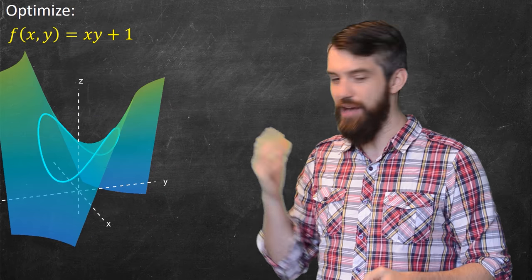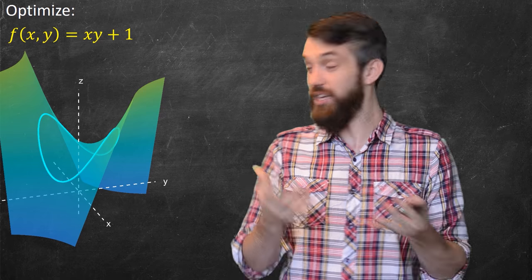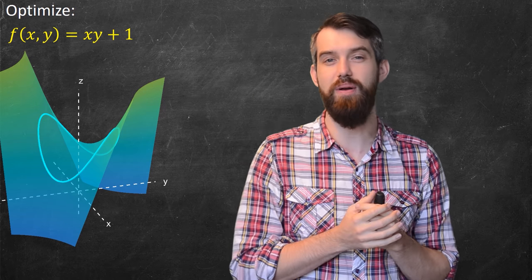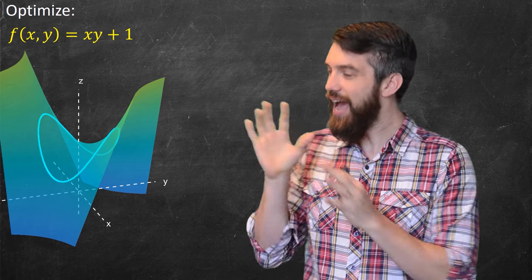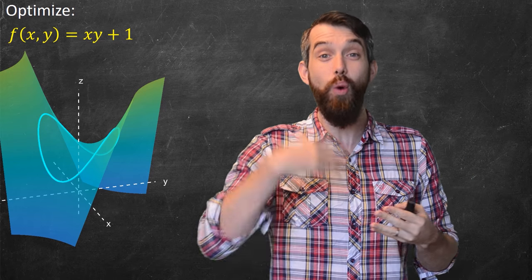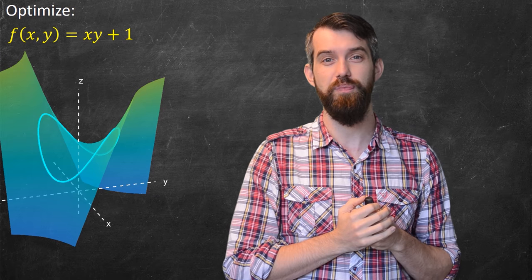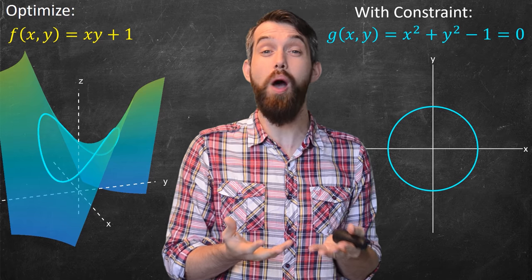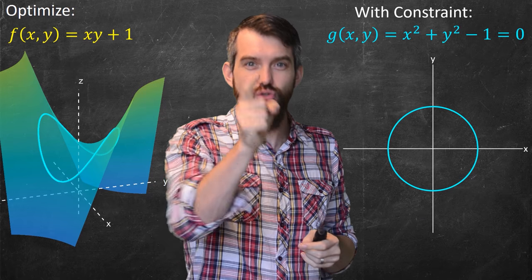Consider this graph. What I have is the graph of some function, f(x,y) = xy + 1. The graph has a saddle point at the origin, but goes up in one direction forever and down in another. However, if I impose a constraint — if I say it has to be on this particular curve — I'm asking what is the maximum and minimum of this function restricted to that curve. The blue curve shown here is just the equation of a circle: x² + y² = 1.